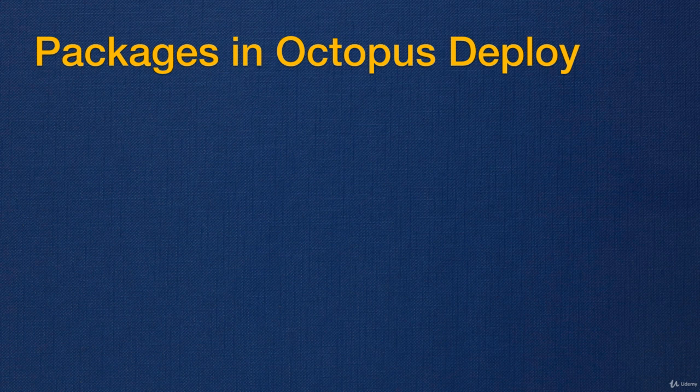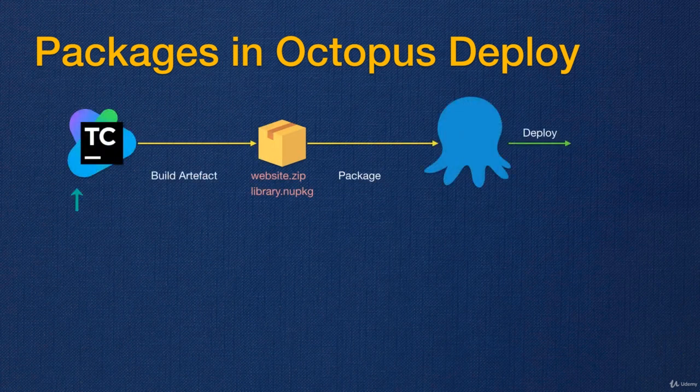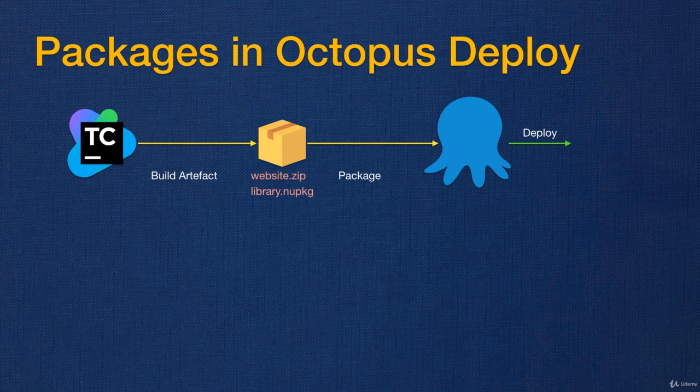Before I show you how we send our code artifact or package from TeamCity to Octopus Deploy, I have to explain how we normally name our packages because the name is important. We compile and build the code in TeamCity and create a build artifact. In Octopus Deploy it's called a package — they refer to the same thing. To store a build artifact in Octopus Deploy, it has to be either a zip file or a NuGet package. NuGet packages are in fact just zip files.